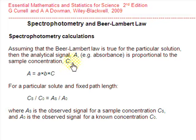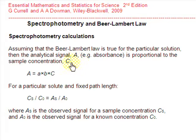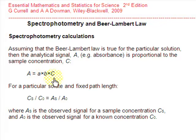In a spectrophotometer, if the Beer-Lambert law is true for a particular solution, then the analytical signal A recorded is proportional to the sample concentration C. This can often be written as the absorbance, capital A, is equal to ABC, where A is the absorptivity of the solute, B is the path length in the spectrophotometer, and C is the concentration of the solution.